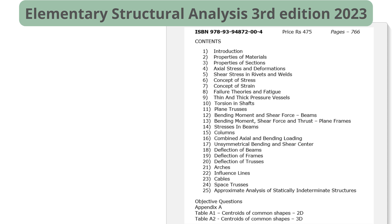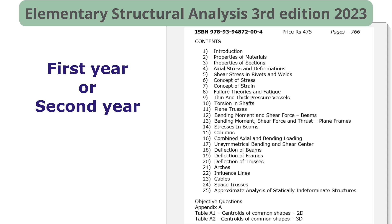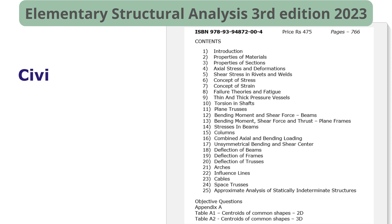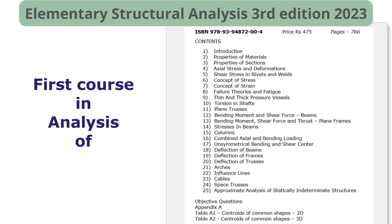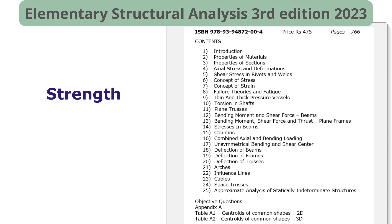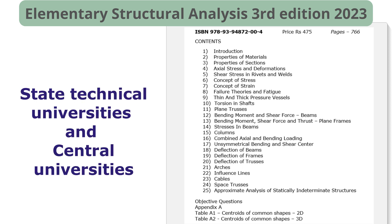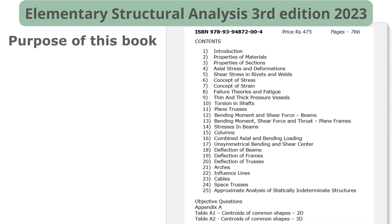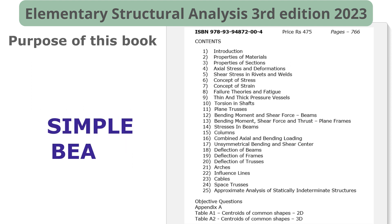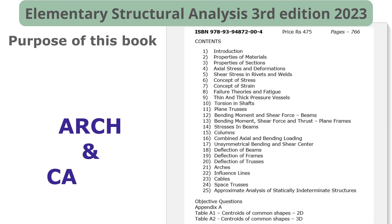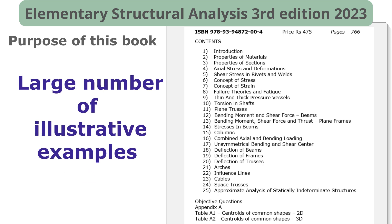This book is designed for use by the first-year or second-year undergraduate students of civil engineering and architecture pursuing a first course in analysis of structures or strength of materials in various state technical universities and central universities. The purpose of this book is to introduce the basic concepts of statically determinate structures such as trusses, simple beams, portal frames, arch, and cables, through a large number of illustrative examples and diagrams.